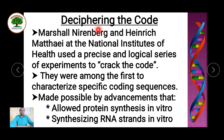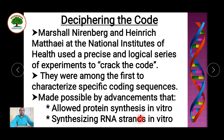Deciphering the genetic code: the first experiment was done by Marshall Nirenberg and Heinrich Matthaei at NIH, USA. They cracked the genetic code for the first time and were among the first to characterize specific coding sequences. This advance was made possible due to two technologies. First, it allowed protein synthesis in vitro — all the protein-synthesizing machinery including ribosomal subunits, mRNA, GTP, and translation factors are placed in a test tube. An artificial RNA strand is introduced and translation happens in vitro.